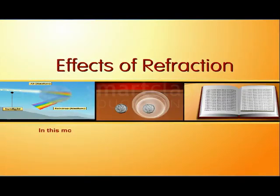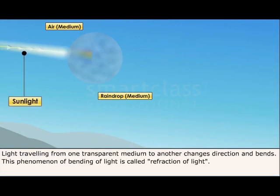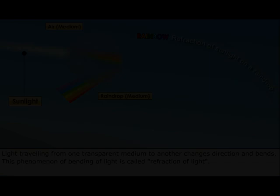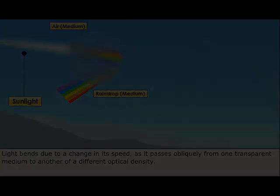In this module, you will learn about the effects of refraction. Light traveling from one transparent medium to another changes direction and bends. This phenomenon of bending of light is called refraction of light. Light bends due to a change in its speed as it passes from one transparent medium to another.